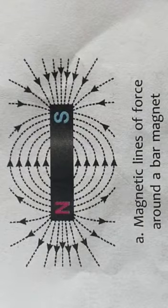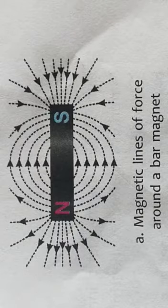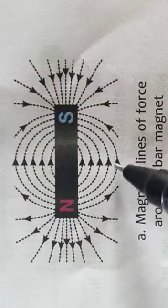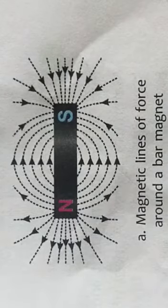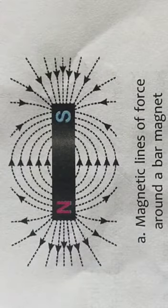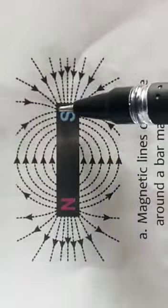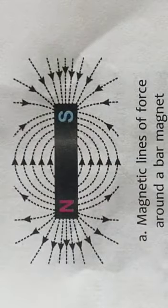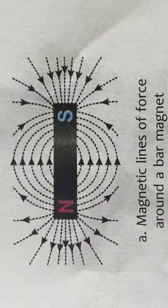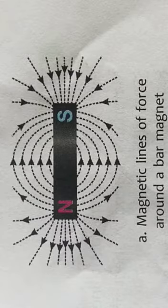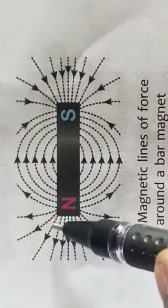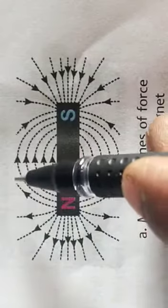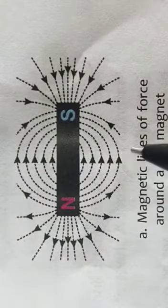No two lines of force intersect each other — they will not meet at any point. Magnetic field lines are concentrated near the poles of the magnet. The arrow mark on the lines shows the direction in which the magnetic field lines move.